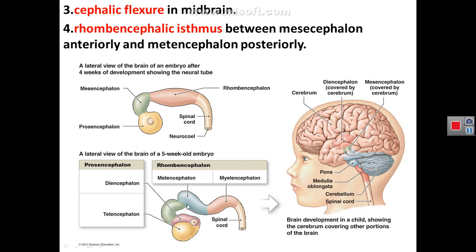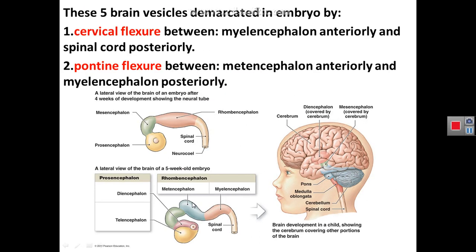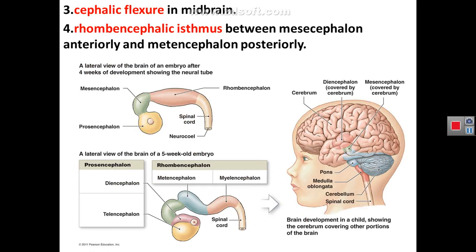The cephalic flexure is the angle of the midbrain — the midbrain is angulated and this angle is called the cephalic flexure. There is also a rhombencephalic isthmus between the mesencephalon anteriorly and the metencephalon. So: cervical flexure between spinal cord and myelencephalon; pontine flexure between metencephalon and myelencephalon; cephalic flexure in the midbrain; and the rhombencephalic isthmus between metencephalon and midbrain.